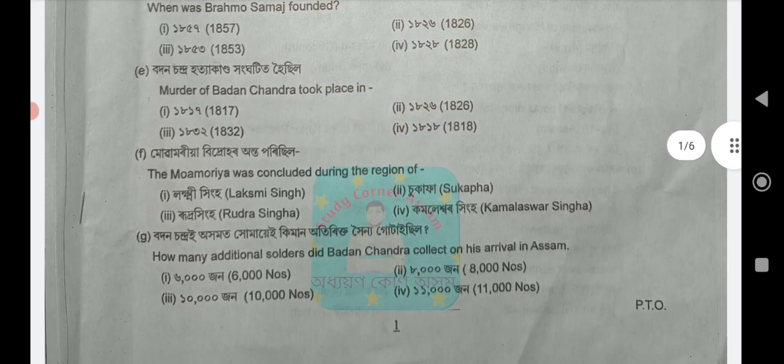Next, question number 2: The Battle of Badonsandra took place in — 1817, 1826, 1832, or 1818? The answer is option number 4: 1818.